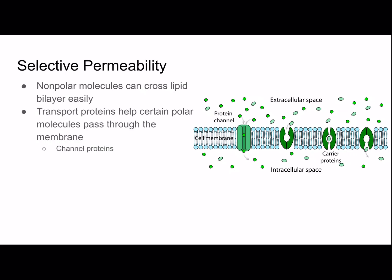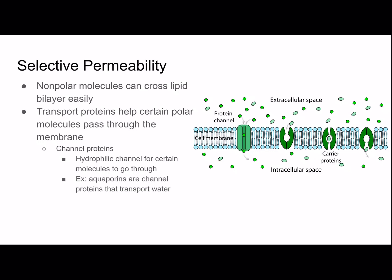Channel proteins act as a hydrophilic channel for certain molecules to pass through. For example, aquaporins are channel proteins that transport water because water is polar. Carrier proteins hold onto molecules and change shape to transport them across the membrane. You can see a channel protein on the left side of the picture, and a carrier protein where a molecule enters and then the protein flips so the molecule exits the other side.